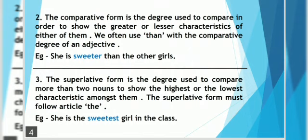The superlative form of the degree is used to compare more than two nouns to show the highest or the lowest characteristics amongst them. The superlative form must follow article 'the'.